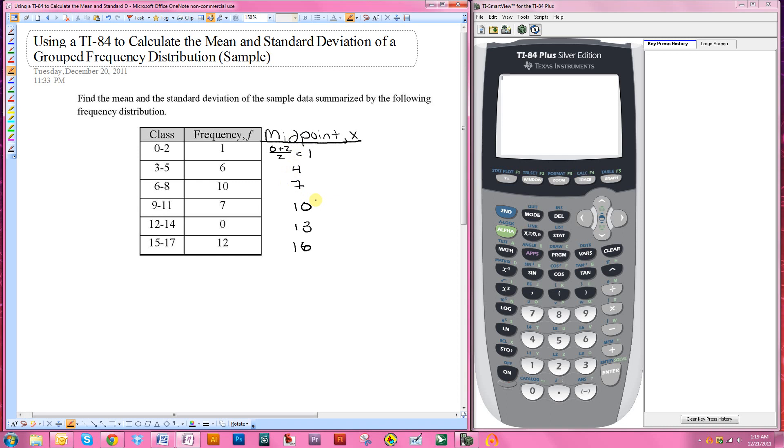Now that we have each of the midpoints listed, these are going to be representing our values for x. So what we're going to say is we have one value that is 1, we have six values that are 4, we have 10 that are 7, 7 that are 10, 0 that are 13, and 12 that are 16. So what I need to do now is enter this into my calculator.